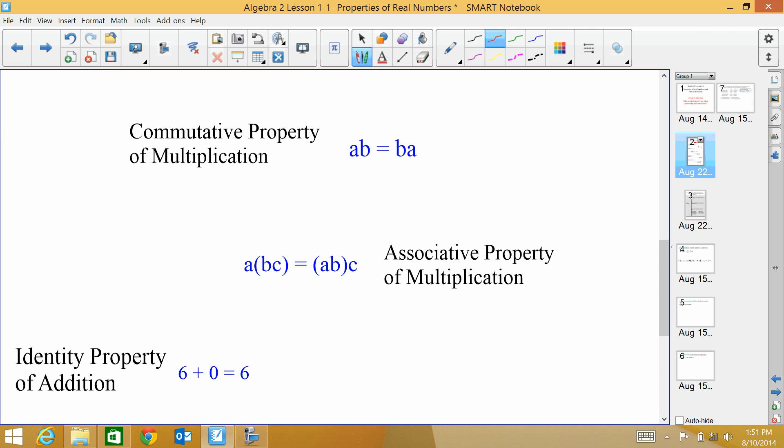Then we have the commutative property of multiplication. Now, this is the same as the one above, just now instead of adding, we're multiplying. So you'll notice that the B and the A just switched places, but they're right next to each other, which implies that we're multiplying. Same thing with associative property of multiplication. We stayed in the same order, A, B, C, A, B, C. So the letters stayed in the same order, but the parentheses moved from around the B and the C to around the A and the B. So that's associative because the groups changed.